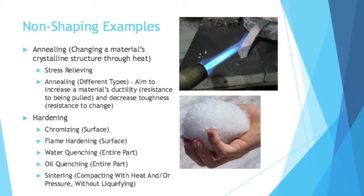Then there is sintering, which is compacting with heat and/or pressure but without liquefying. A great real-life example of sintering is making a snowball: when you press a snowball together, the crystals aren't melting to form it — the pressure you're applying is making one whole object.